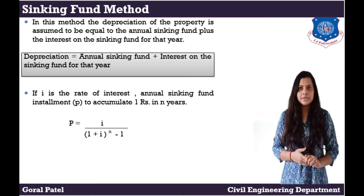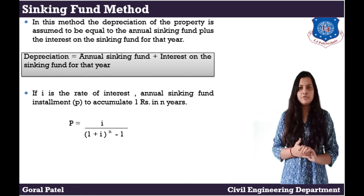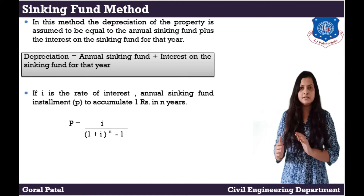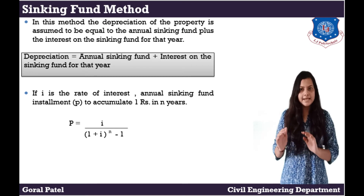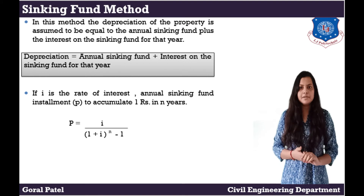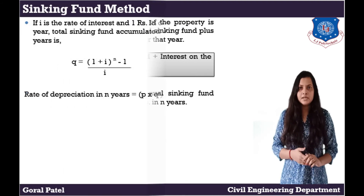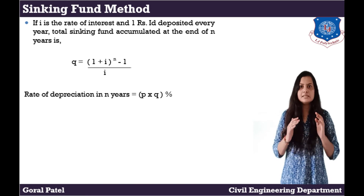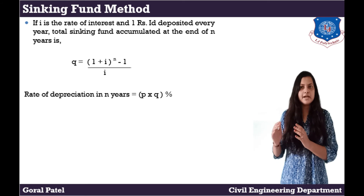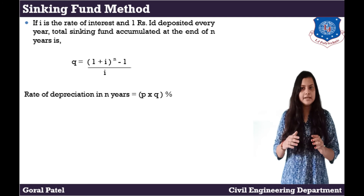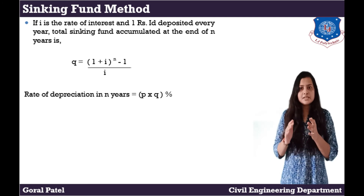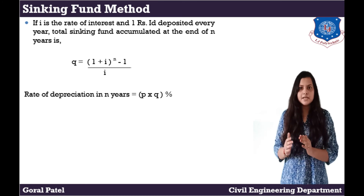The next method is the sinking fund method. In this method, the depreciation of the property is assumed to be equal to the annual sinking fund plus the interest on the sinking fund for that year. If I is the rate of interest, the annual sinking fund installment P to accumulate 1 rupee in N years is: P = I / ((1 + I)^N - 1). If 1 rupee is deposited every year, the total sinking fund accumulated at the end is: Q = ((1 + I)^N - 1) / I. The rate of depreciation annually is equal to P multiplied by Q, expressed as a percentage.